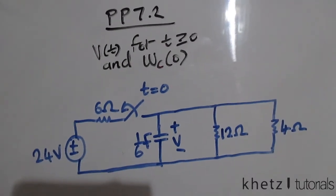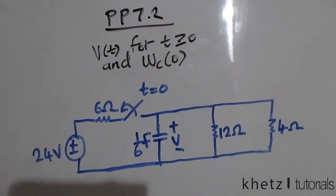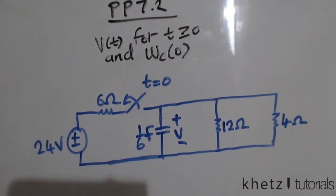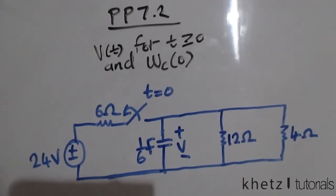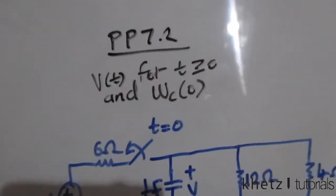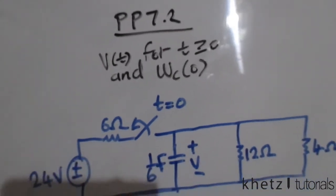Welcome to CAT's Tutorials. In this video I'll be covering practice problem 7.2. Given this circuit, we are asked to find V of t for time greater than or equal to zero and the energy associated with the capacitor at time zero.